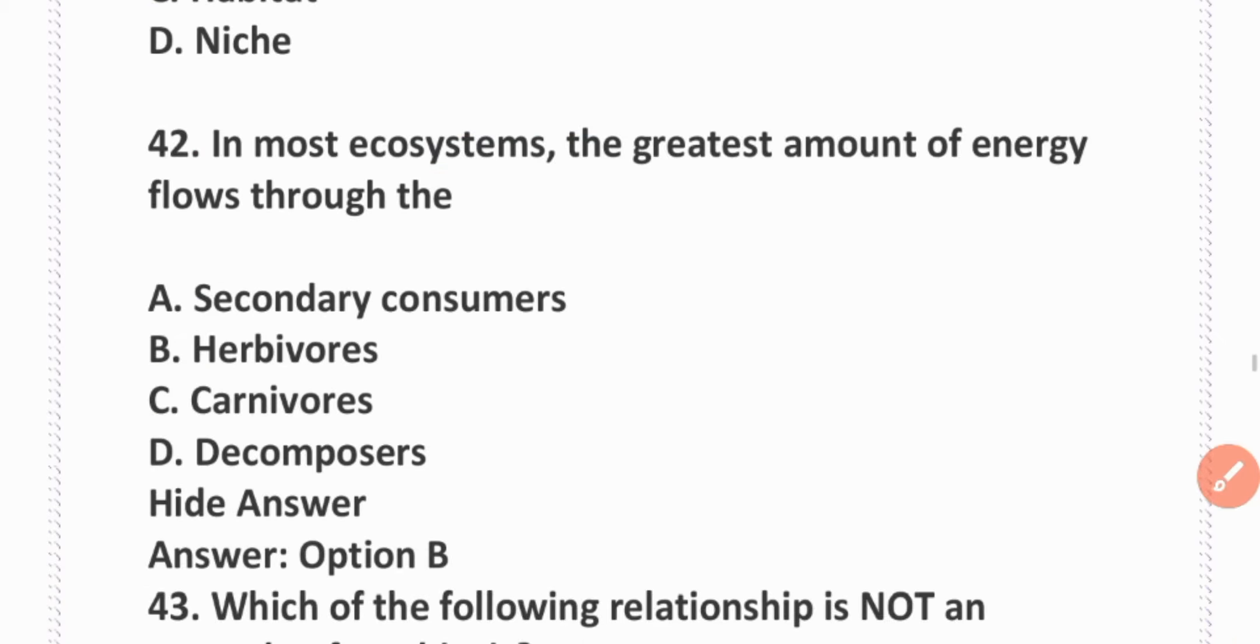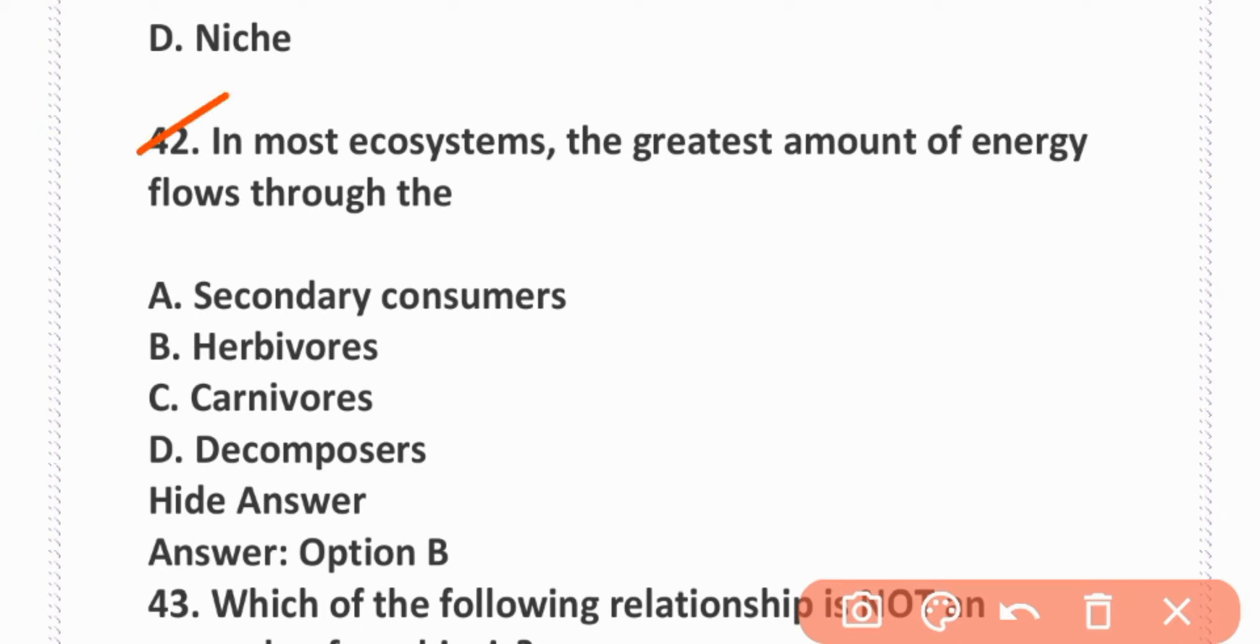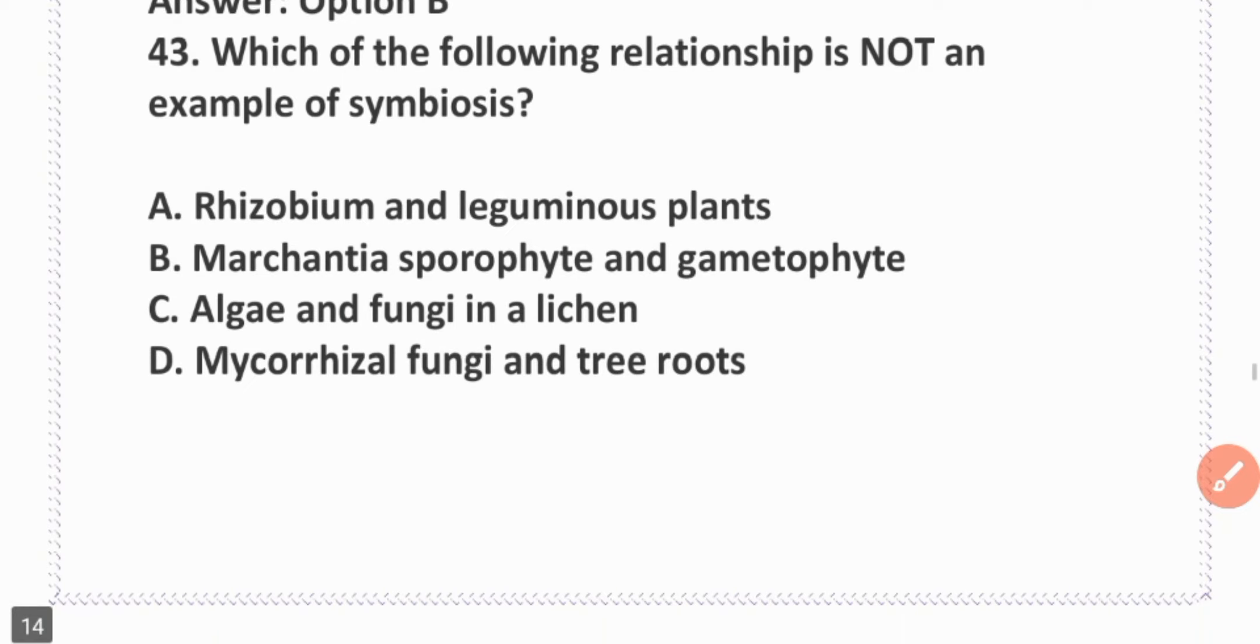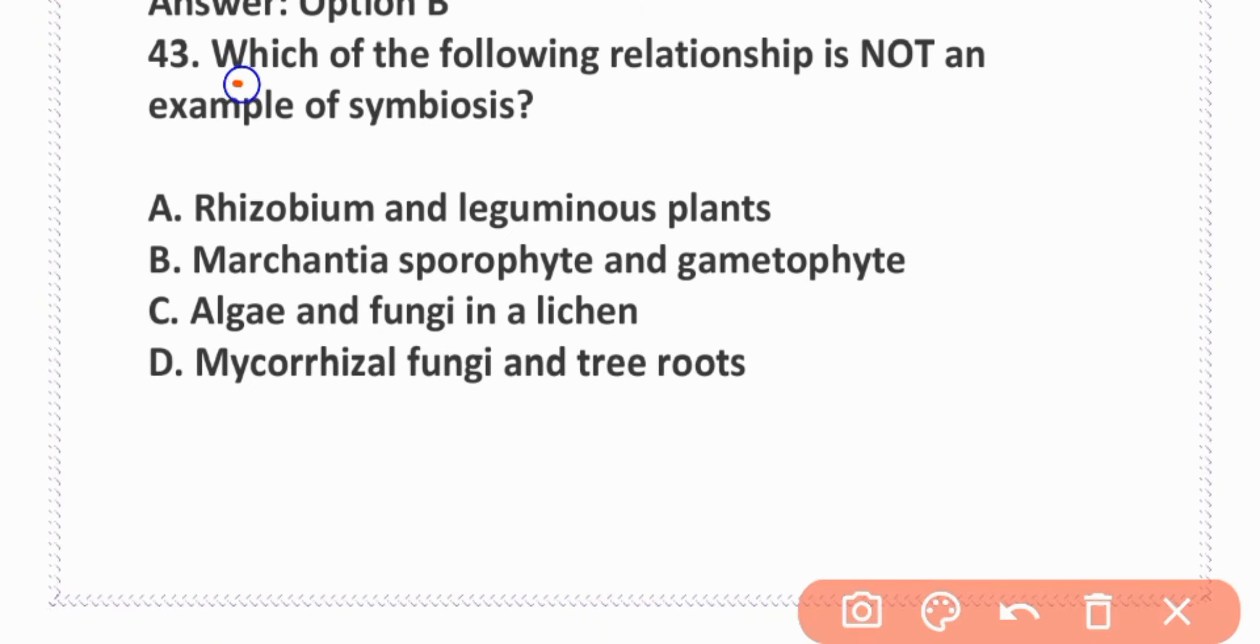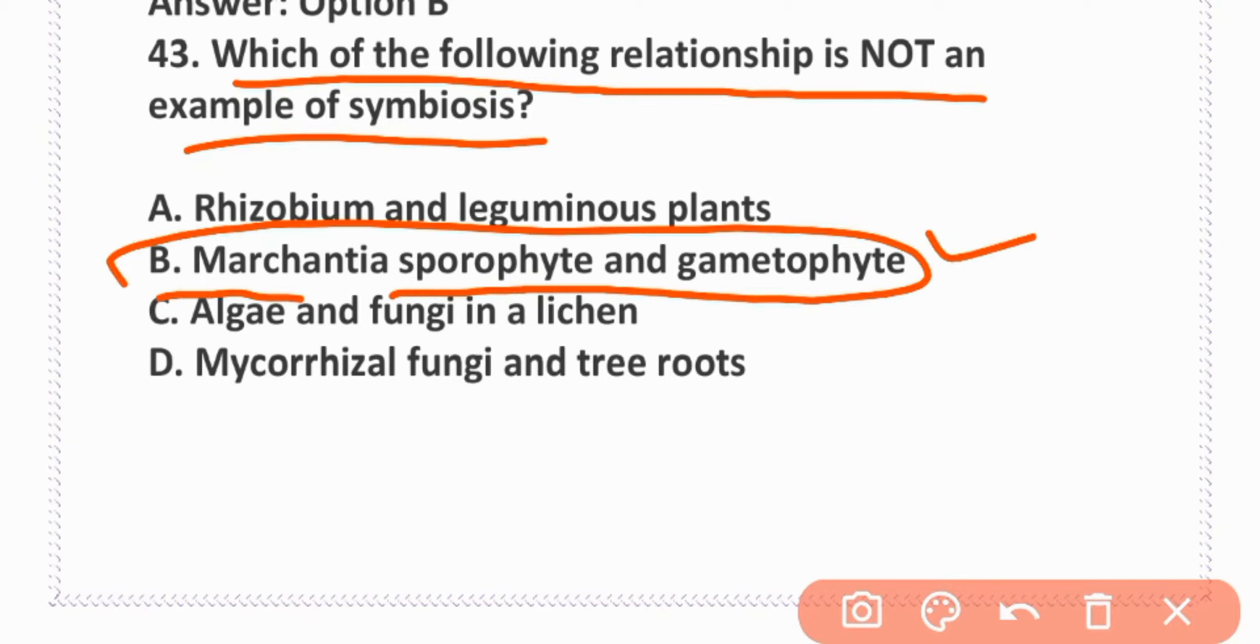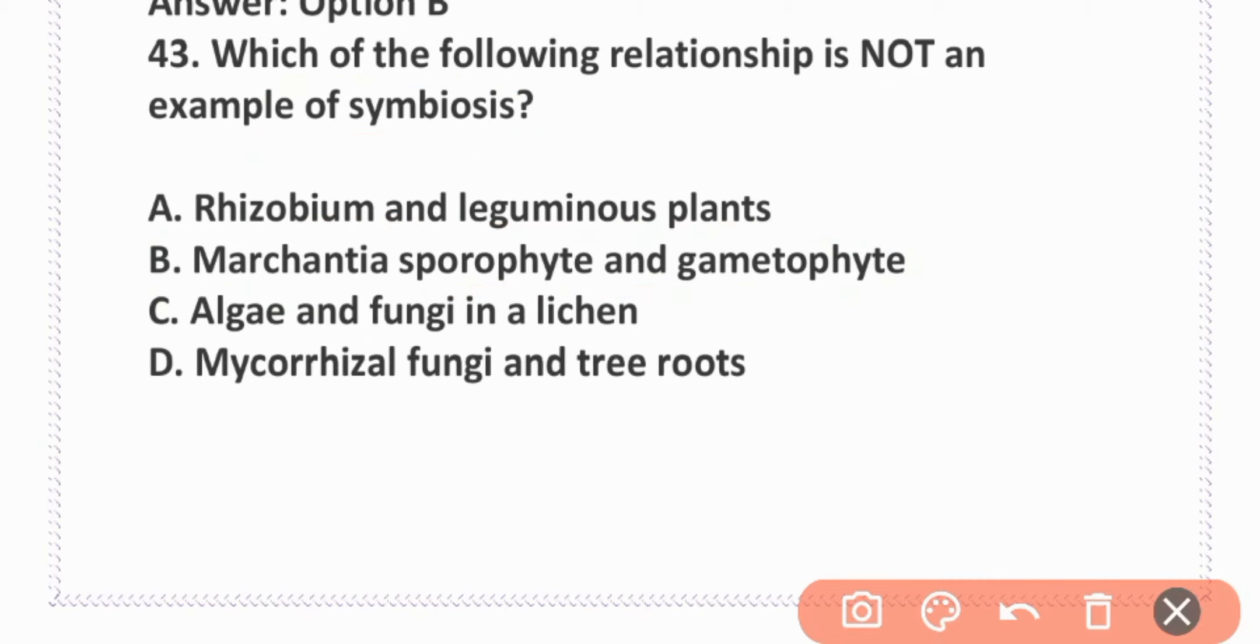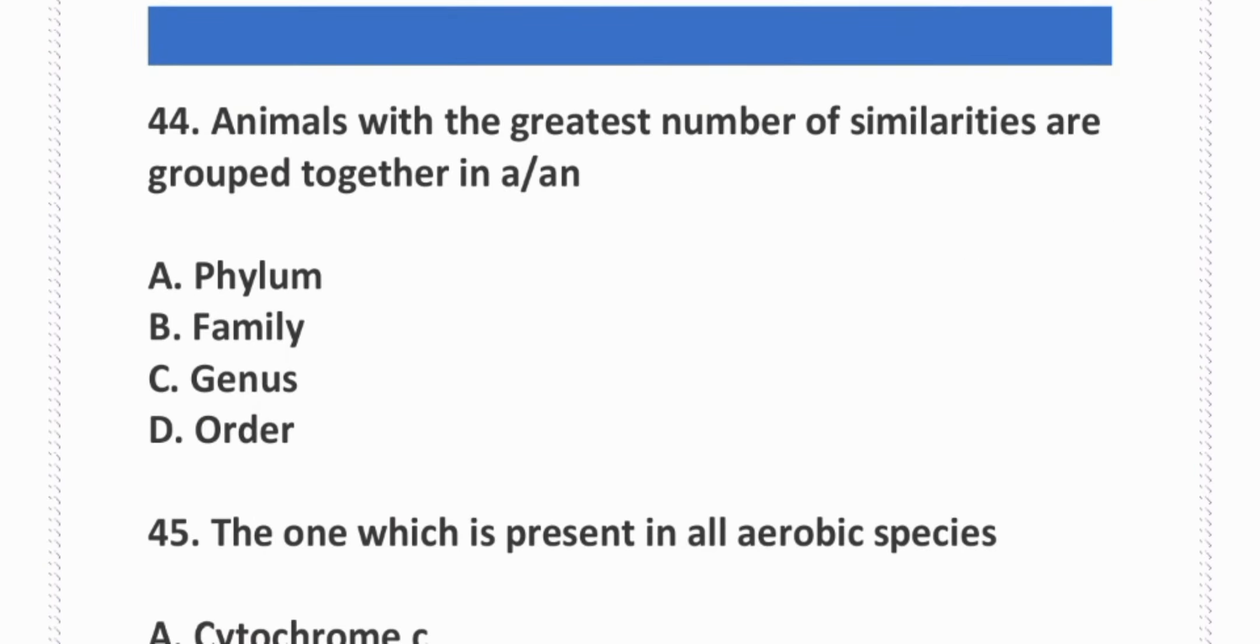The competition between species will be greatest if they attempt to occupy the same niche. Option D is correct. In most ecosystems, the greatest amount of energy flows through herbivores. Option B is correct.